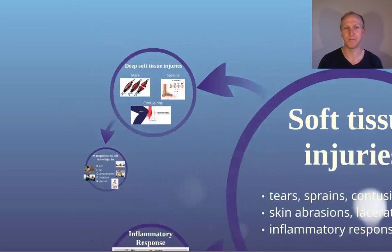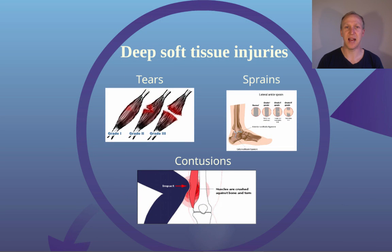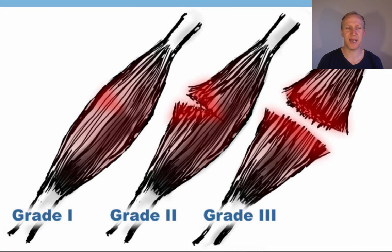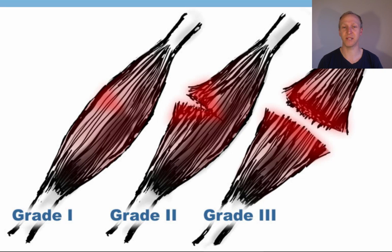Looking at tears, they are graded — and so are sprains. A grade one tear is very minor with small injuries; if left untreated, they lead to overuse injuries and weaken the muscle, making a grade two or grade three tear more likely. A grade two tear shows a proper rip in the muscle, and a grade three tear goes all the way through.